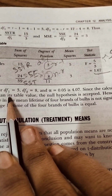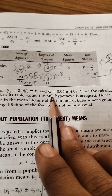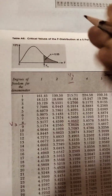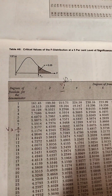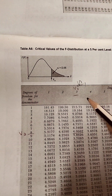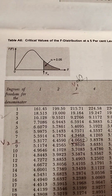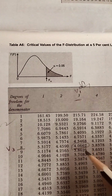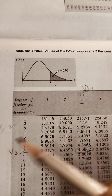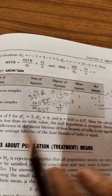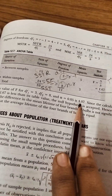To find the table value, use df1 = 3 and df2 = 8 at a significance level of 0.05 (since none was specified in the problem). Looking up the F-table: read df1 = 3 horizontally and df2 = 8 vertically. The table value is 4.07 (approximately 4.0662).